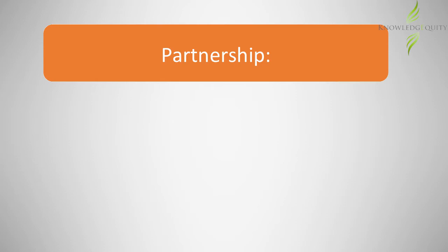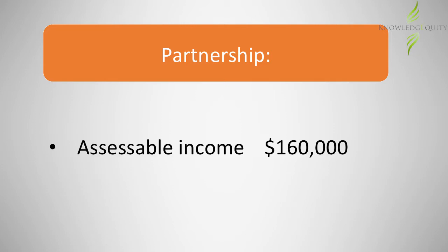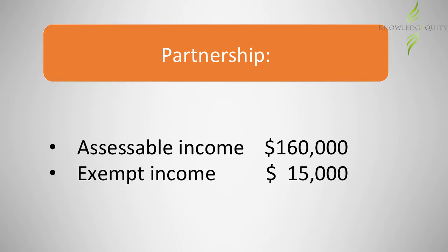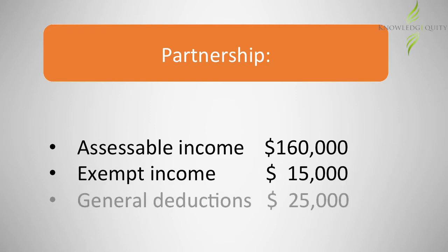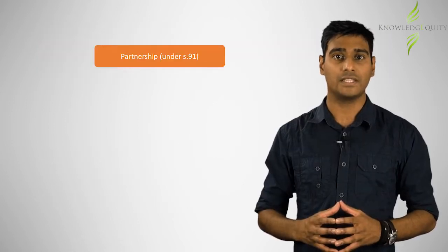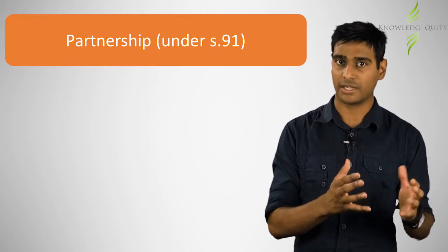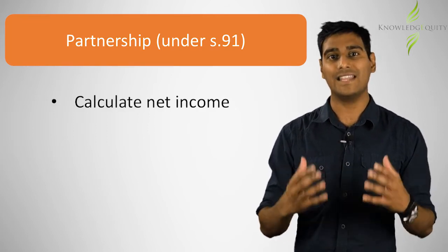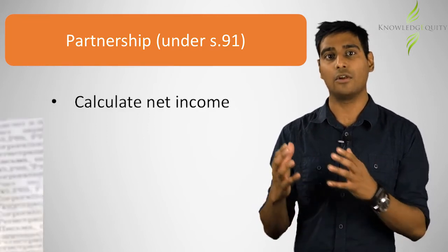For the current financial year, before taking into account any payments due to Alice and Bill, the partnership has assessable income of $160,000, exempt income of $15,000, and general deductions of $25,000.